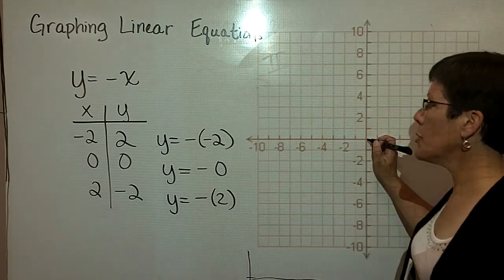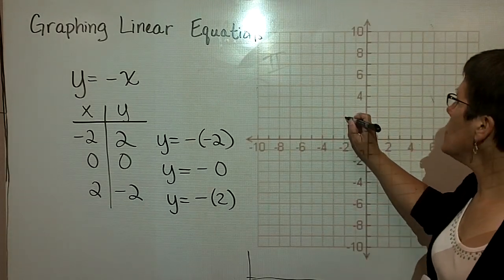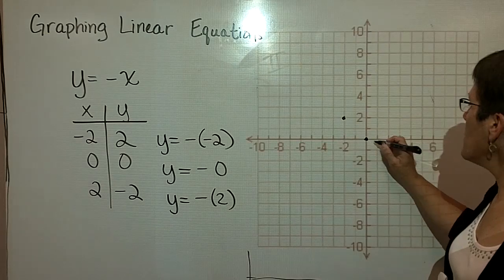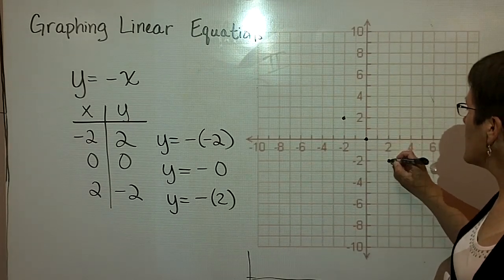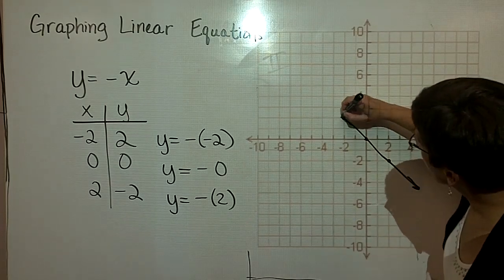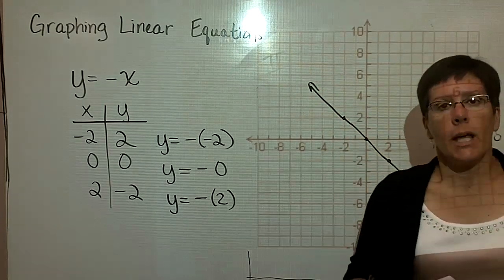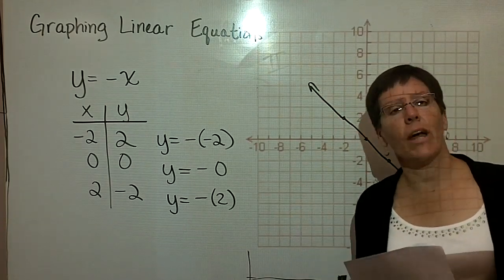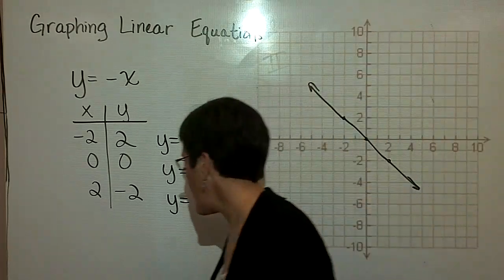So I go ahead and plot those ordered pairs. When x is a negative 2, y is 2. x is 0, y is 0. And when x is 2, y is a negative 2. The 3 ordered pairs are in line. I'll draw a line through those and put arrowheads on each end. And I'm done graphing that linear equation. Let's take one with a fraction.